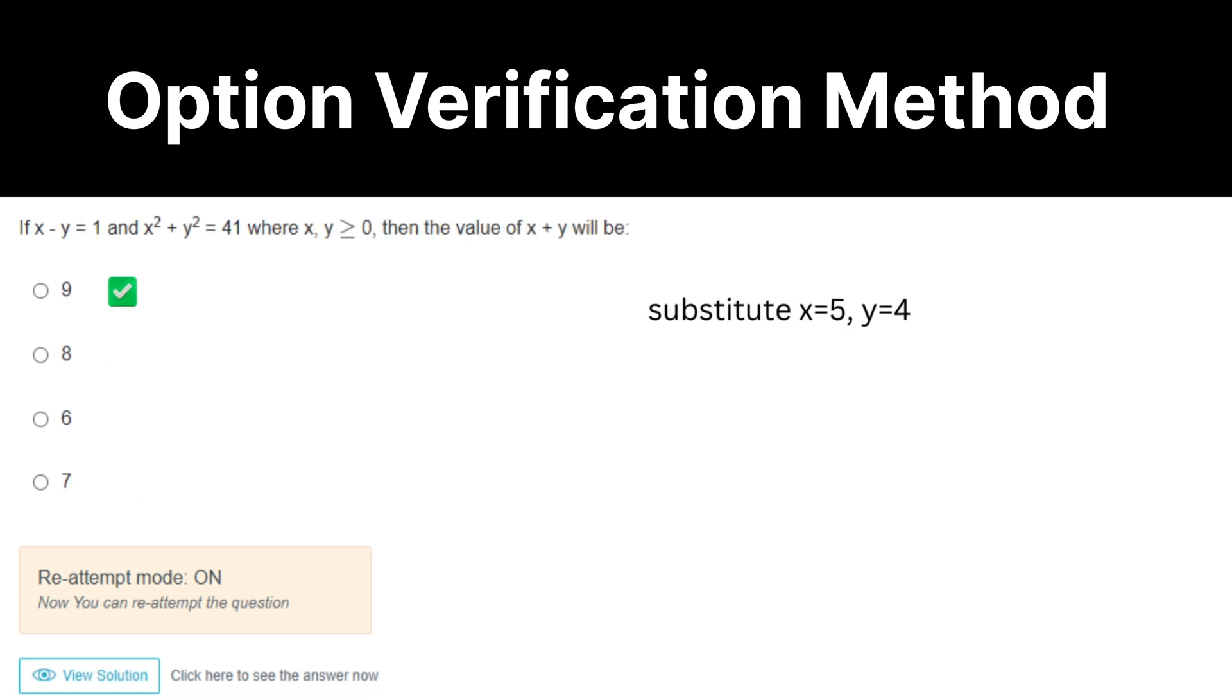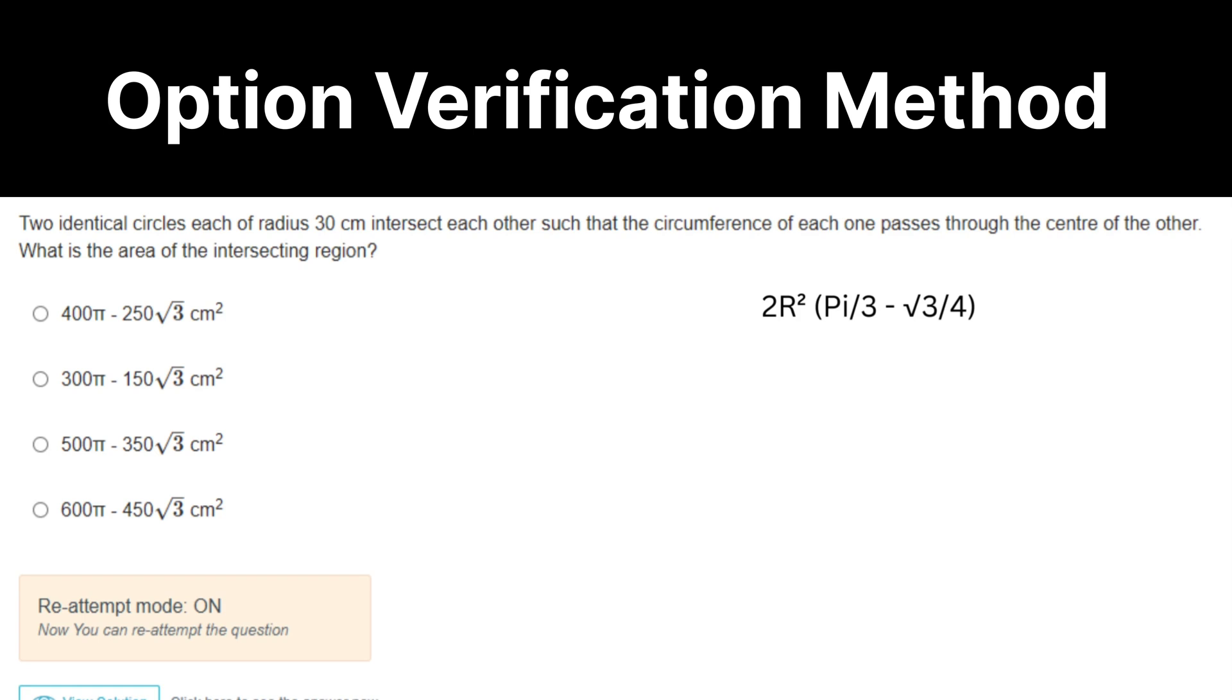Again, substitute some values. Here, x equal to 5, y equal to 4. 5 plus 49. It is not an option verification, but I want you to remember this formula so that if the same model gets repeated, you don't have to waste more than 1 minute for this same problem. You can just solve it in 10 to 15 seconds. The formula is 2r square into pi by 3 minus root 3 by 4. That's it.